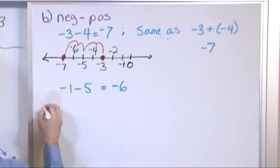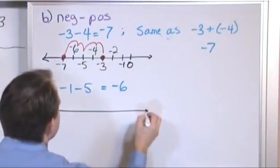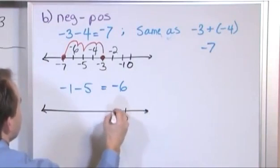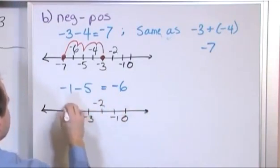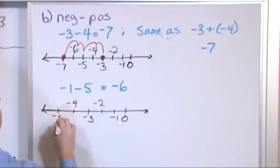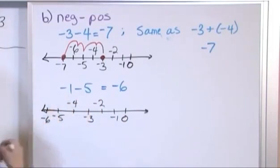And just to refresh your memory, that's because if this is 0, negative 1, negative 2, negative 3, negative 4, negative 5, and negative 6 over here...